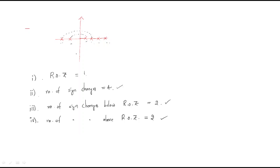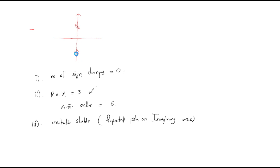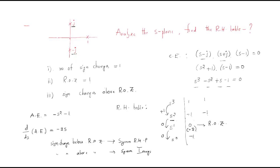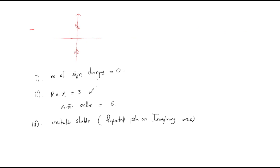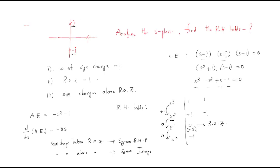These are the different models, very useful for understanding ROZ and symmetricity — symmetric about the origin, above ROZ, and below ROZ. Below ROZ we always have right-hand poles; above ROZ we have imaginary axis poles. I hope all of you understand this session. Thank you.